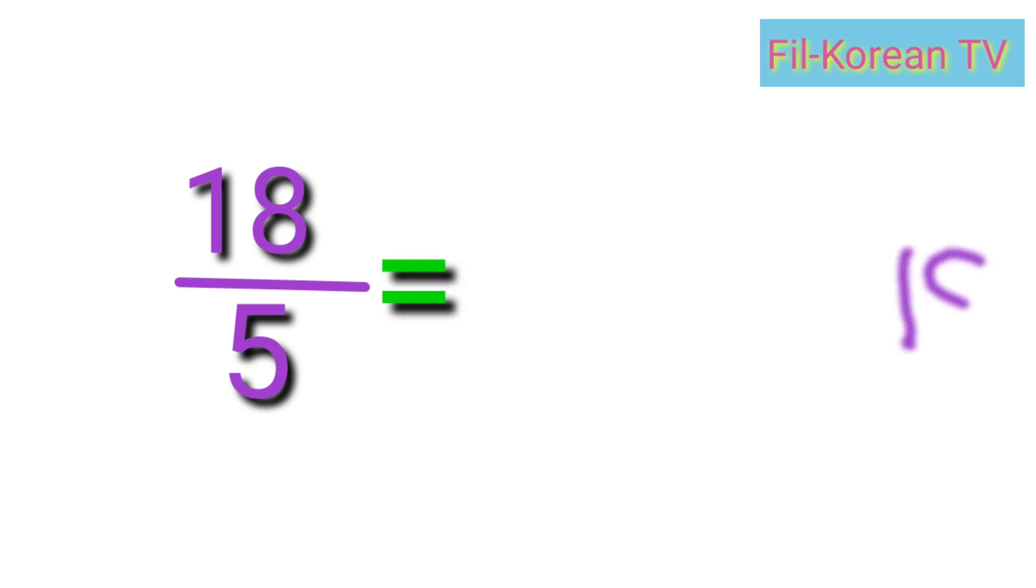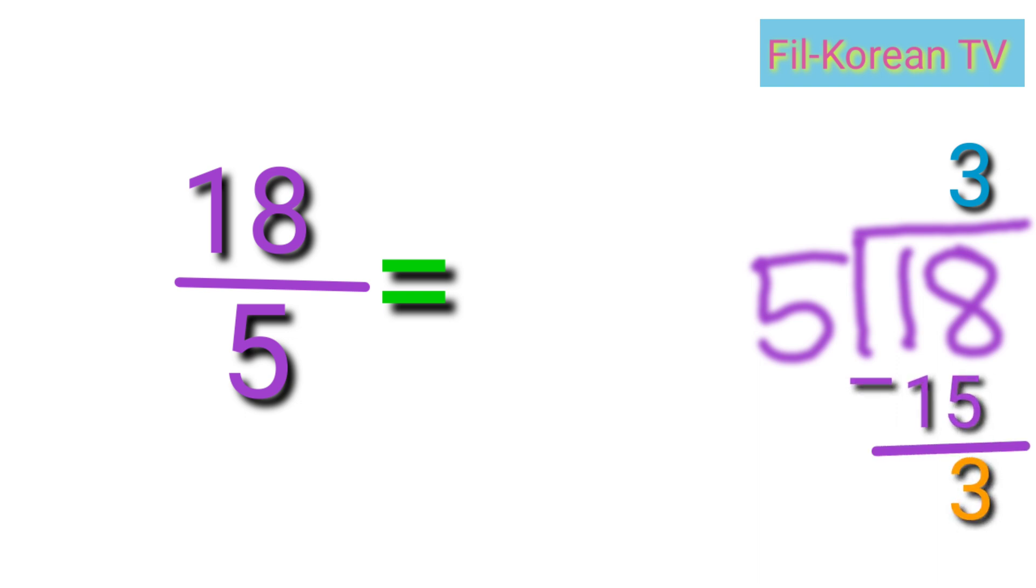Let's answer. Eighteen divided by five. Eighteen divided by five equals three. Three times five equals fifteen. Subtract. Eighteen minus fifteen equals three.